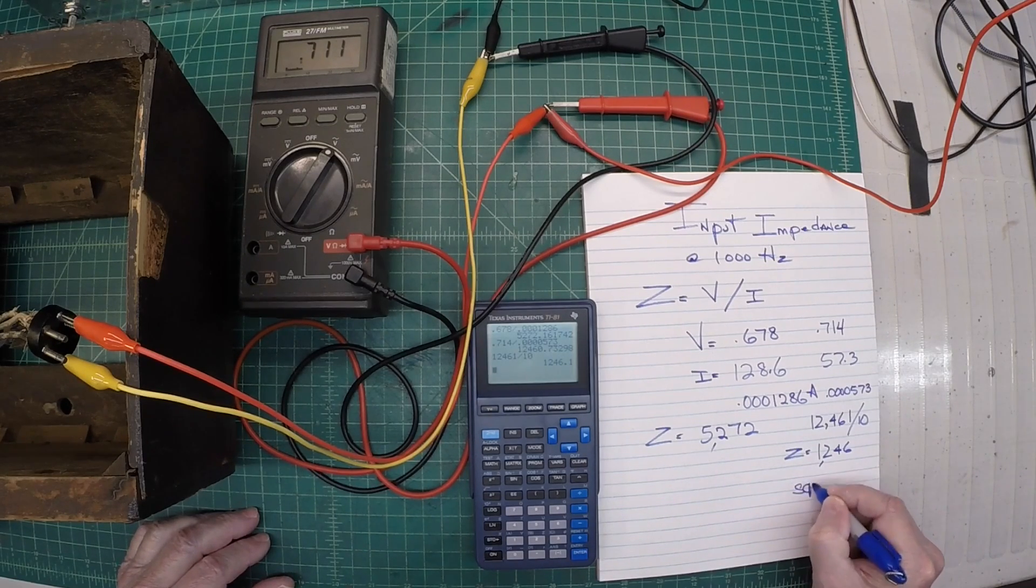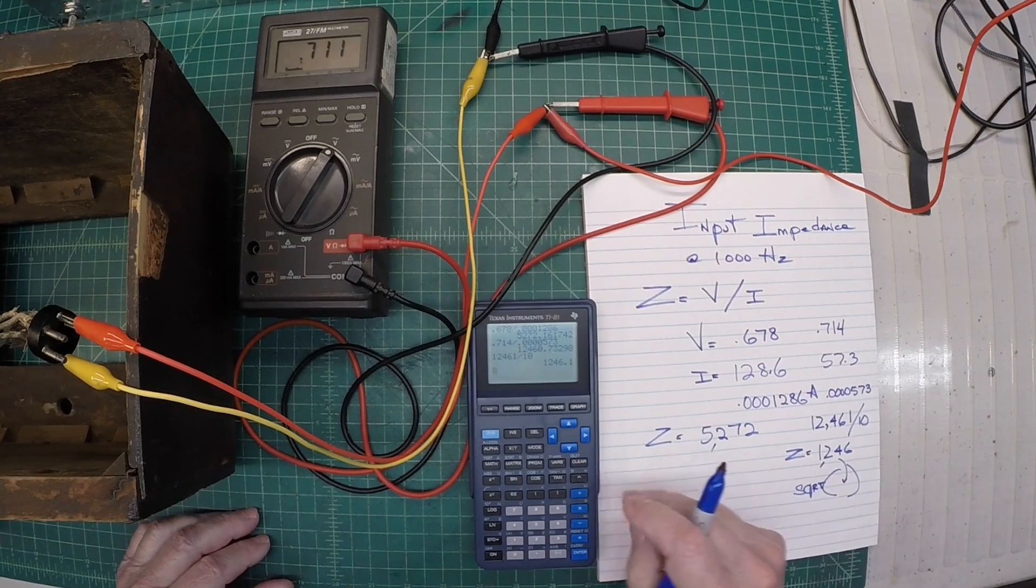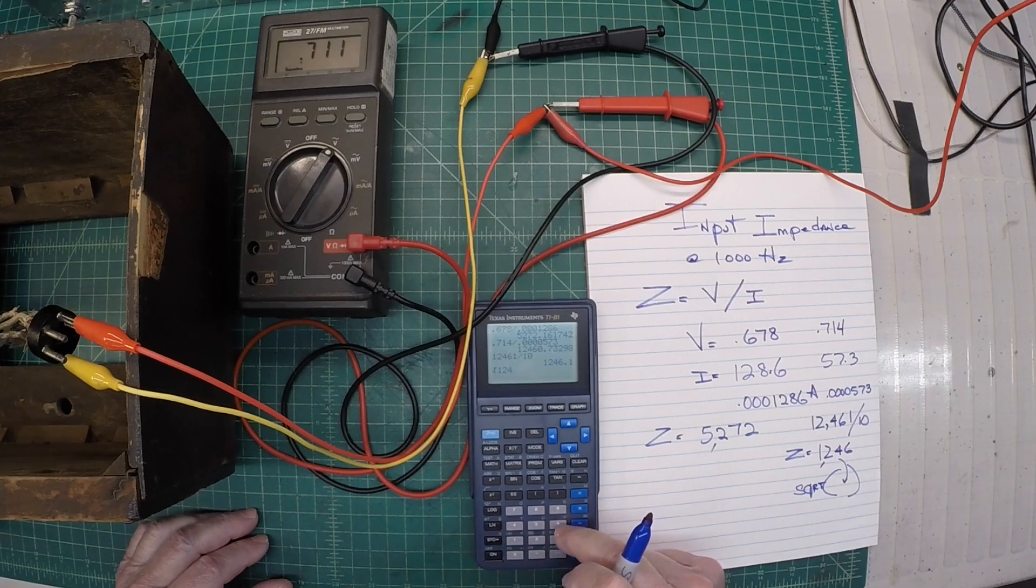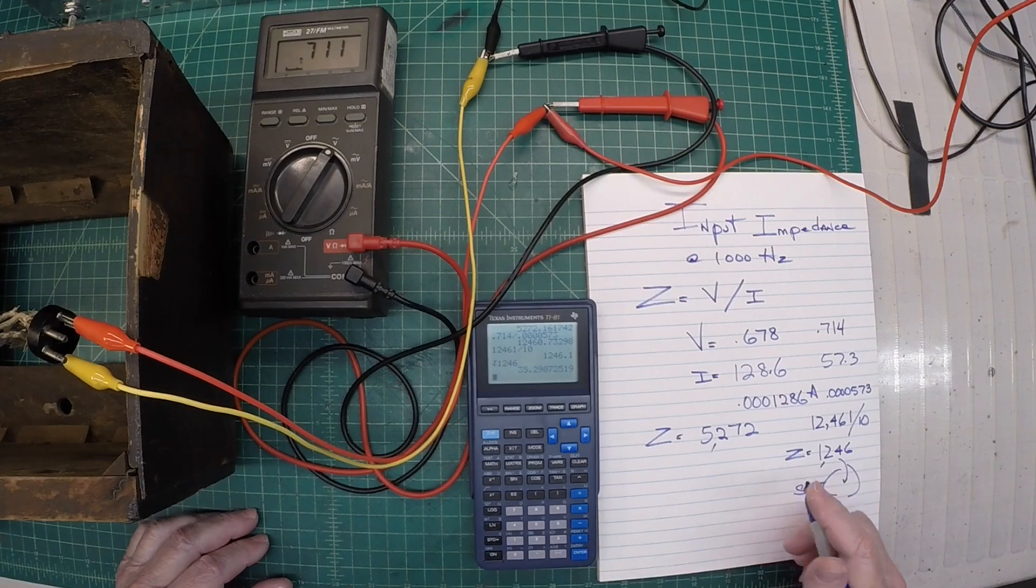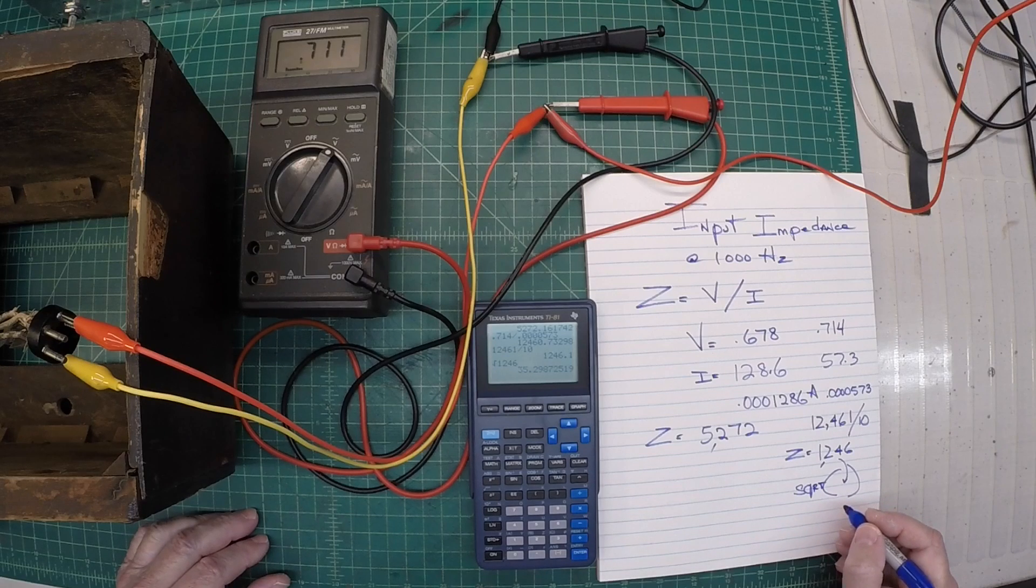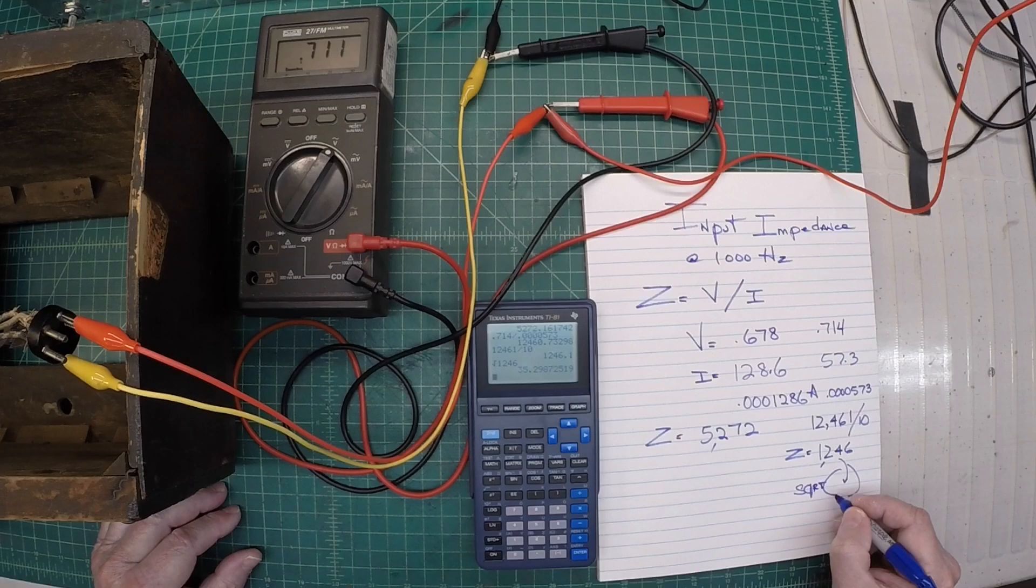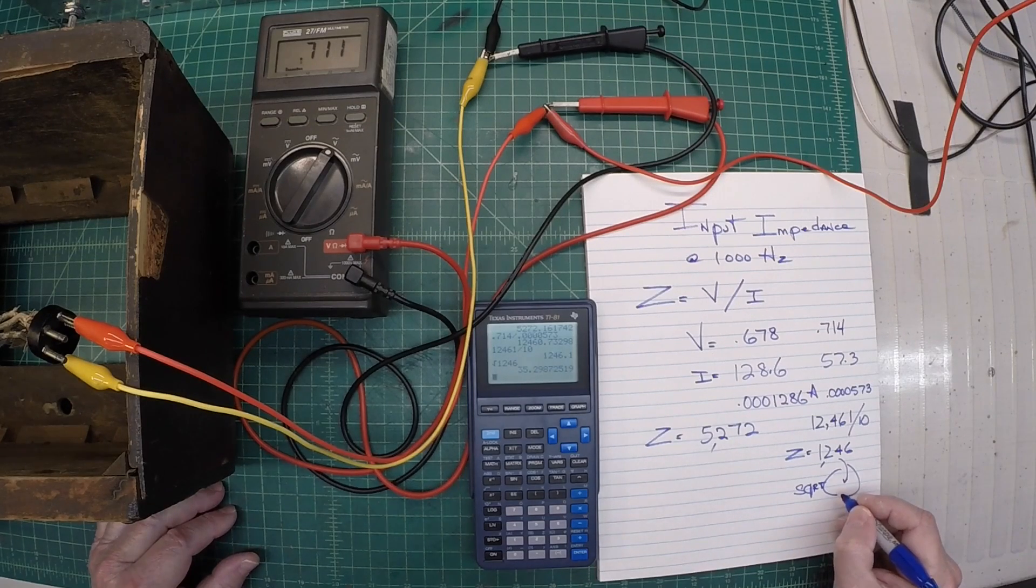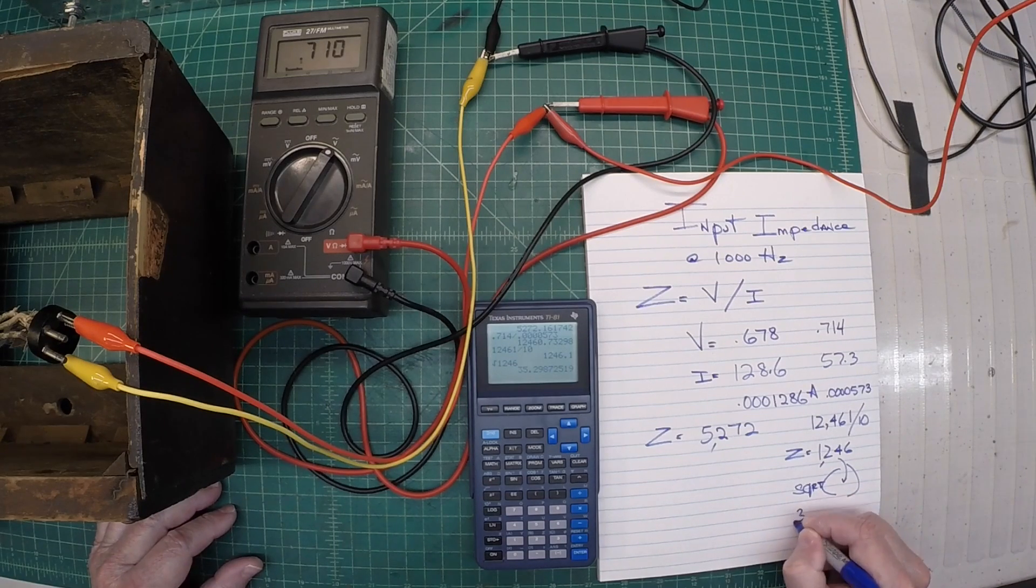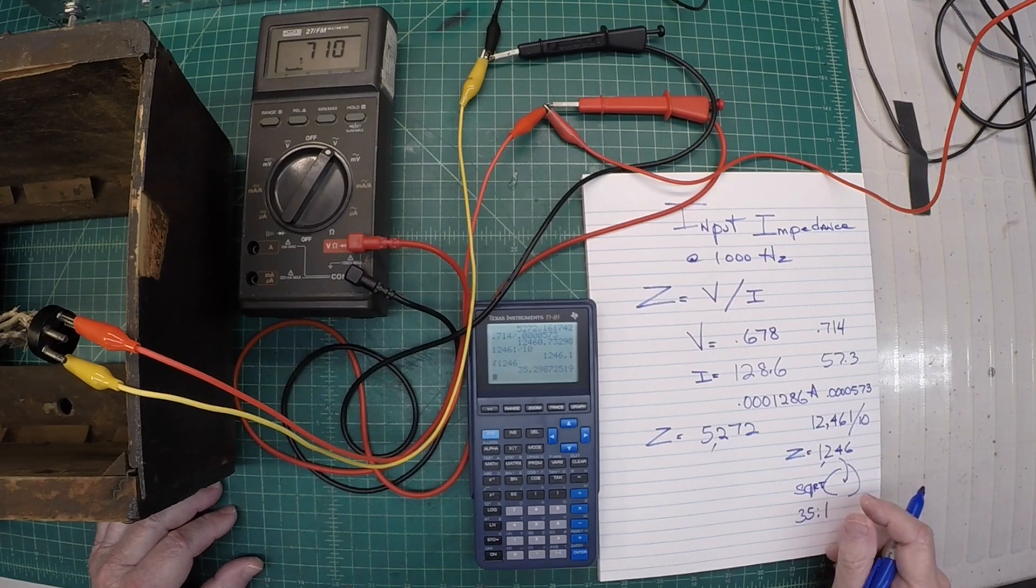Now we can simply do the turns ratio real quick by taking the square root of this number. So I can just take the square root of this number. We'll do that real quick. And you can see that comes out to 35.3. So 35. I think originally I calculated around 36 to 1. So this comes out to 35.3 to 1, or we'll just say 35 to 1 would be the turns ratio itself.